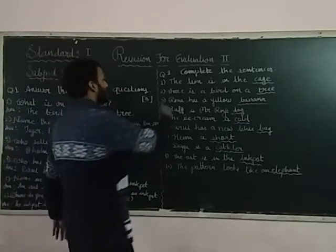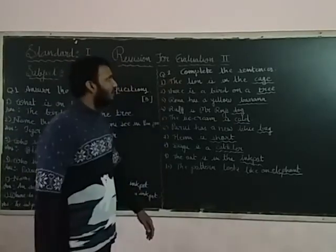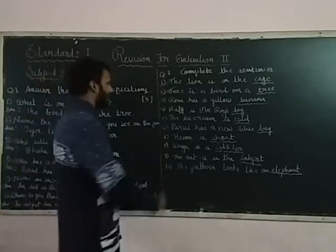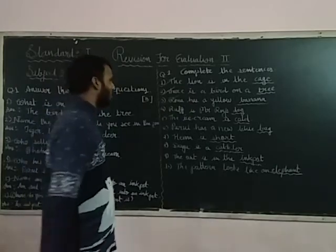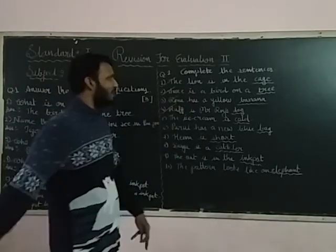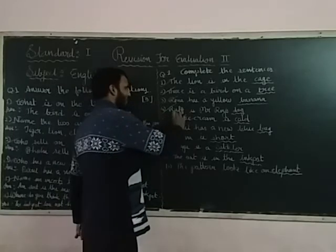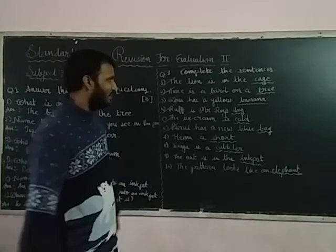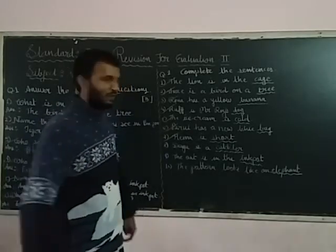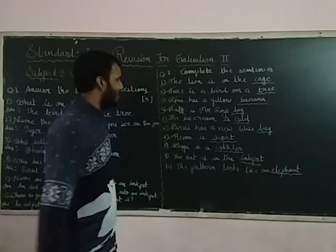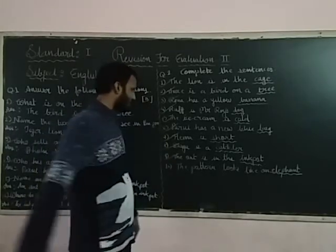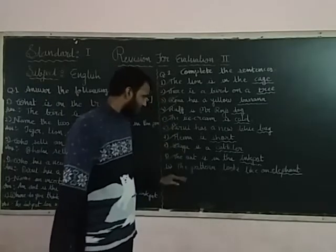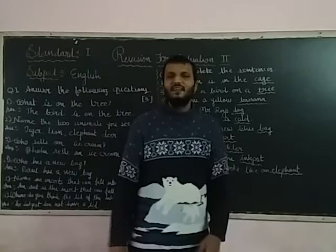Let's start the review. One: The lion is in the cage. Two: There is a bird on the tree. Three: The remark is really low — banana. Four: The dog is Mr. Roy's dog. Five: The ice cream is cold. Six: Parul has a new blue bag. Seven: Henry is shorter. Eight: The value — cold. Nine: An ant is in the inkpot. Ten: The pattern looks like an elephant.